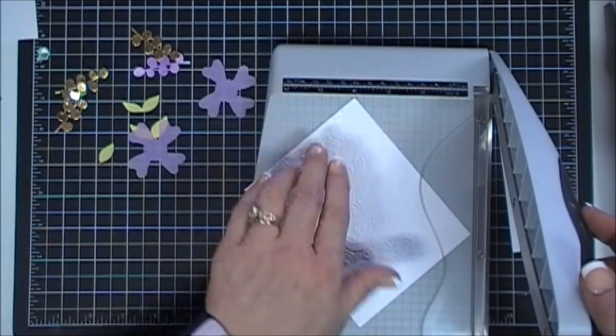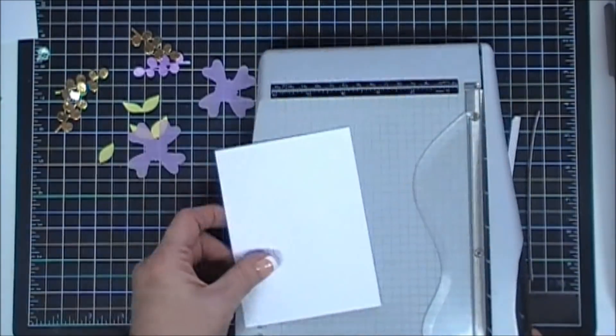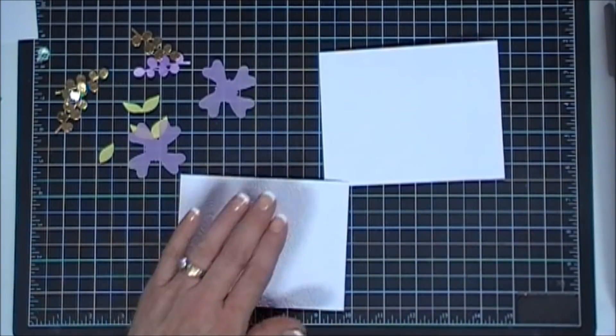Okay, let's make another project. I'm going to take my embossed panel, we're going to trim it down to four inches by five and a quarter. It's going to leave me a little bit of a white border on my card base. I'll just adhere that with my tape runner.